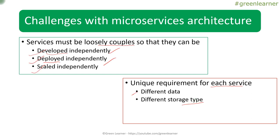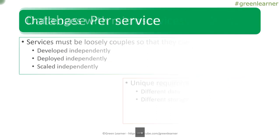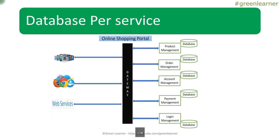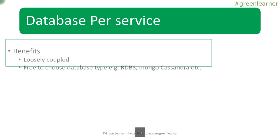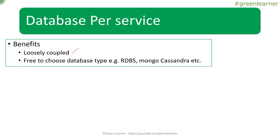Let's talk about the different patterns that we have. First, we have database per service. It means the different microservices — product management, order management, account management — are going to have different databases of their own. Each microservice will be associated with its own separate database. The benefit is that you are free to choose any database type you want: relational database, MongoDB, or Cassandra, as per the requirement of each microservice.